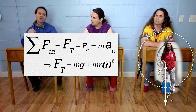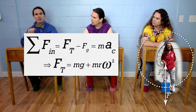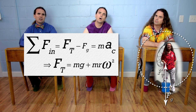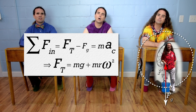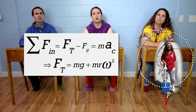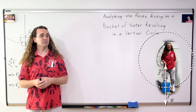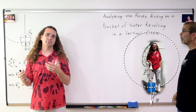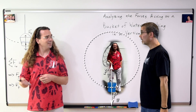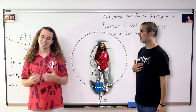In the free-body diagram where the bucket is at the bottom position, you drew the force of tension arrow longer than the force of gravity arrow. How do you know the force of tension is greater in magnitude than the force of gravity there? Billy, that is a fair question.